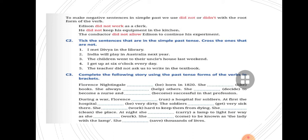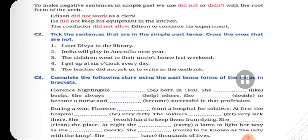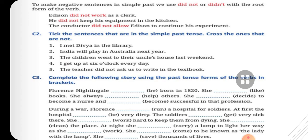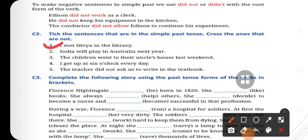In exercise C2, take the sentences that are in simple past tense, cross the ones that are not. I met Divya in the library. This is simple past tense. Met is the second form of meet. India will play in Australia next year. Will, it's future tense. The children went to their uncle's house last weekend. Went is past tense of go. I get up at 6 o'clock every day. It's present tense. The teacher did not ask us to write in the textbook. This is a past tense, negative sentence of simple past tense.